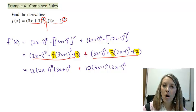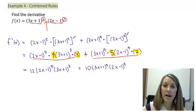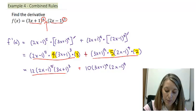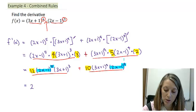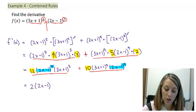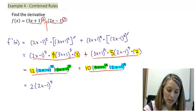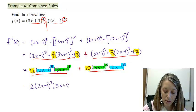You might think that's all you can do to simplify, but in fact you can go a bit further — we can factor this expression, just like we did back in the very first section when we reviewed factoring. Between the coefficients 12 and 10, we have a common factor of 2. We have (2x − 1) to the fifth and (2x − 1) to the fourth, so we can take out (2x − 1) to the fourth. We also have (3x + 1) in common, so we take out (3x + 1) to the third.